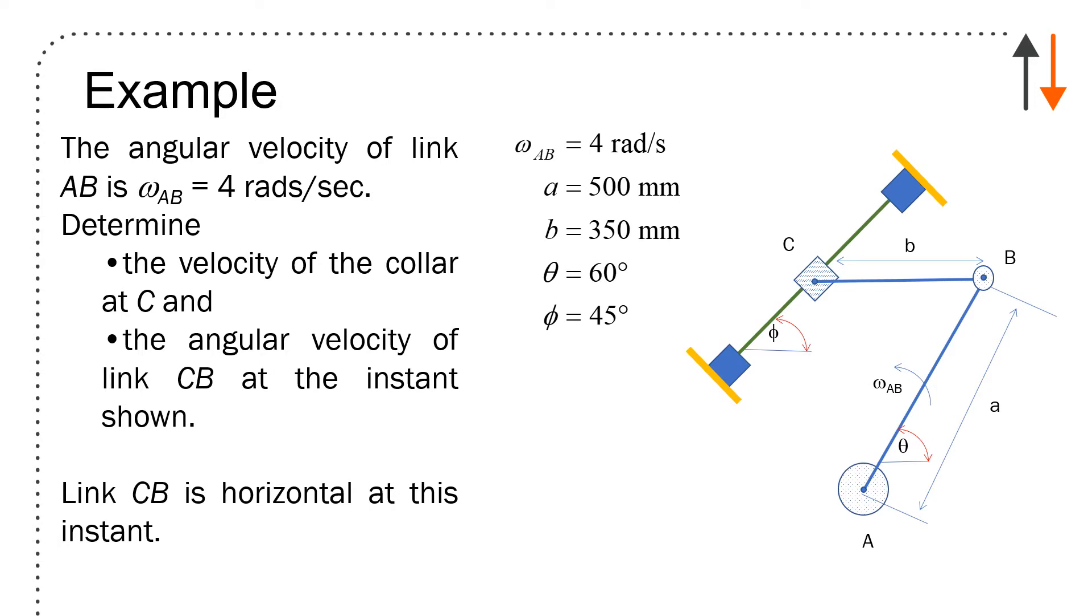So I have an angular link with omega AB, which is given as four rads per second. I haven't put in my coordinate system on this slide yet, but I have X, Y, and positive as counterclockwise. So this is a positive motion. You're asked to find the velocity of the collar at C and the angular velocity of the link BC.